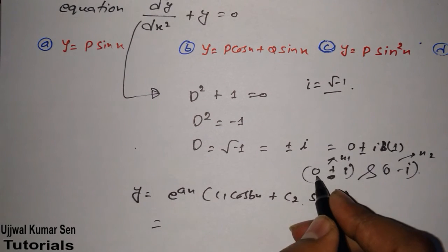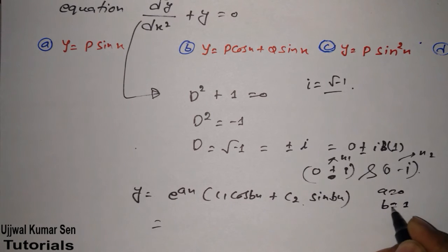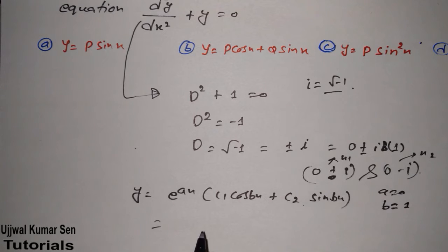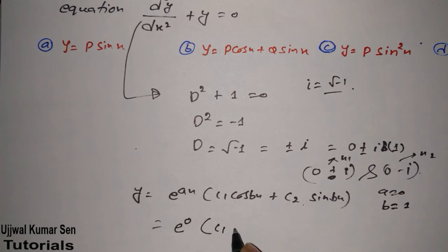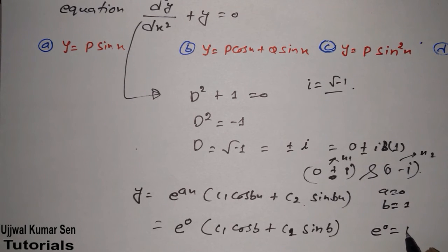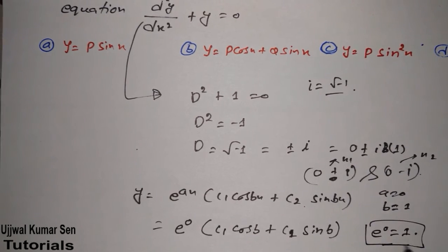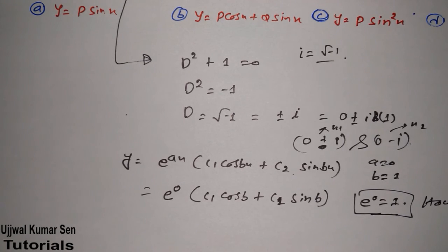What we have to do: in place of a, what did we get? a is equal to 0 here, and b is equal to 1 here. So we put 0 in place of a and 1 in place of b, giving us: y equals e to the power 0x, times c1 cos x plus c2 sin x. Now e to the power 0 is equal to 1, because any constant raised to the power 0 equals 1.